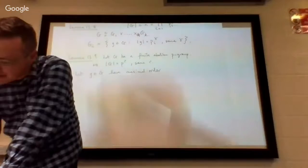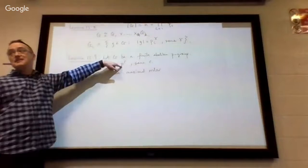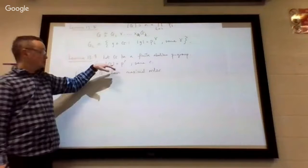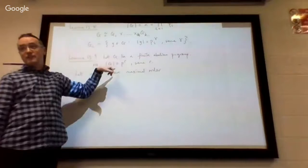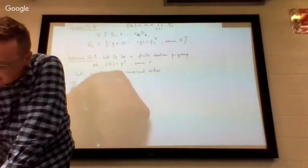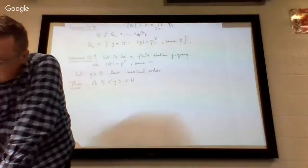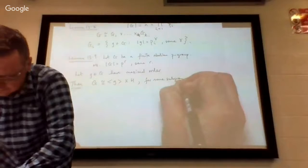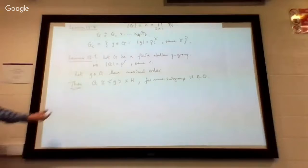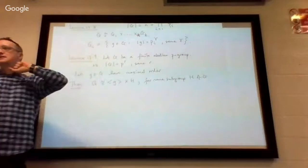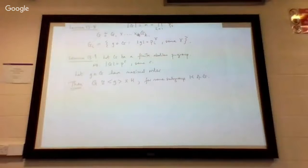Obviously it's a finite group, so everything must have order less than P^r. So there are some elements of maximal order — nothing can have order bigger than P^r. Remember, the order of every element divides P^r. So then, this is the conclusion of the theorem: G is isomorphic to the cyclic subgroup generated by g, an internal direct product with H, for some subgroup H of G.